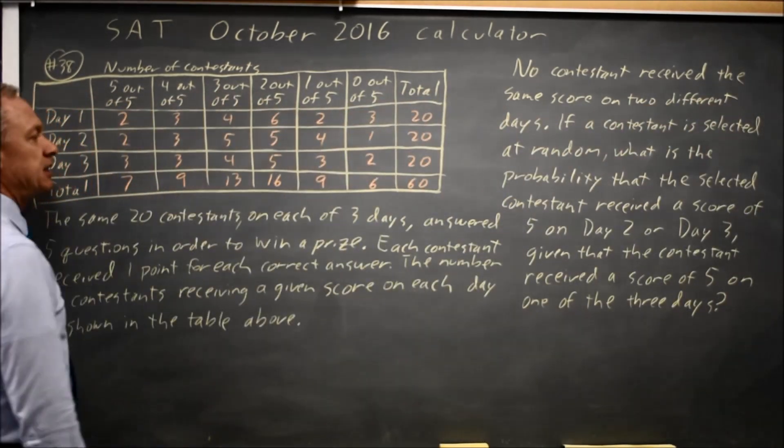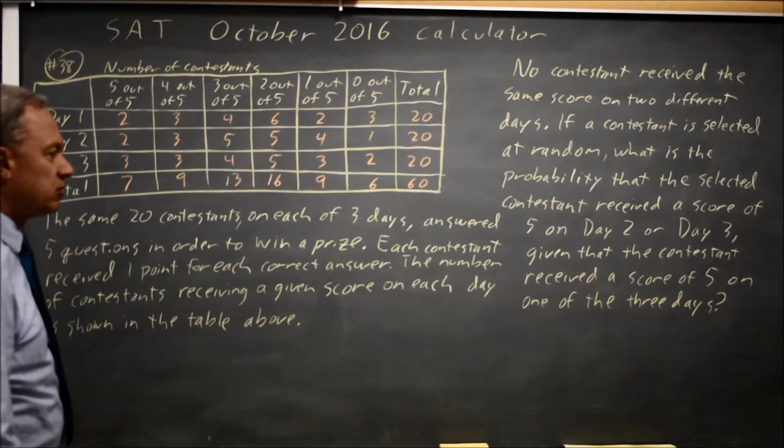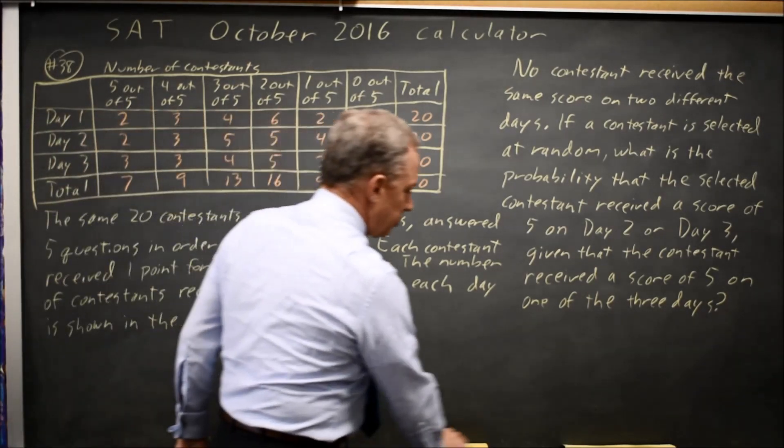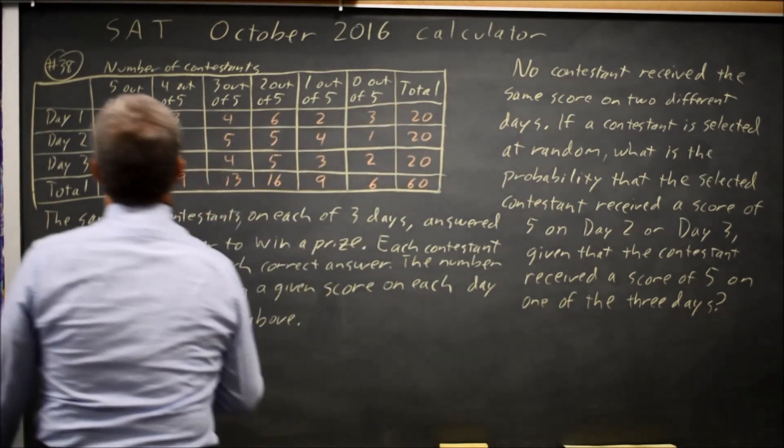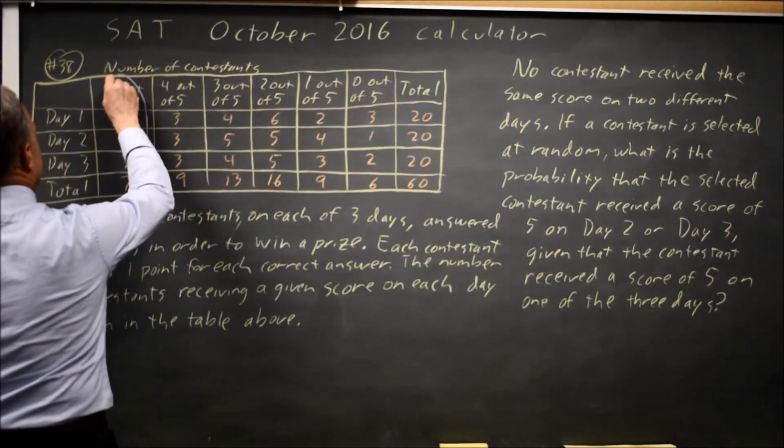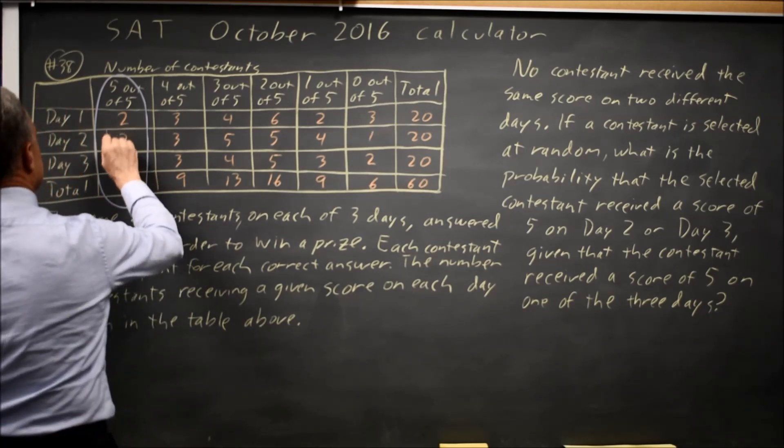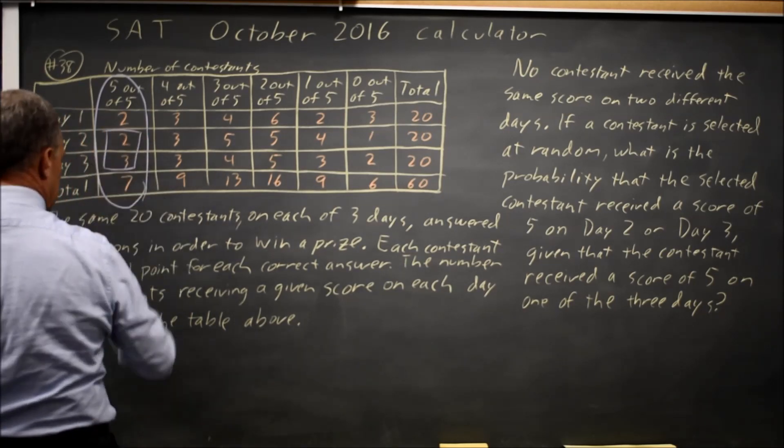that's these two days, given that the contestant received a score of five on one of the three days. So we're looking at the contestants that received a score of five on one of the three days and we want to know what is the probability that they received a five on either day two or day three.